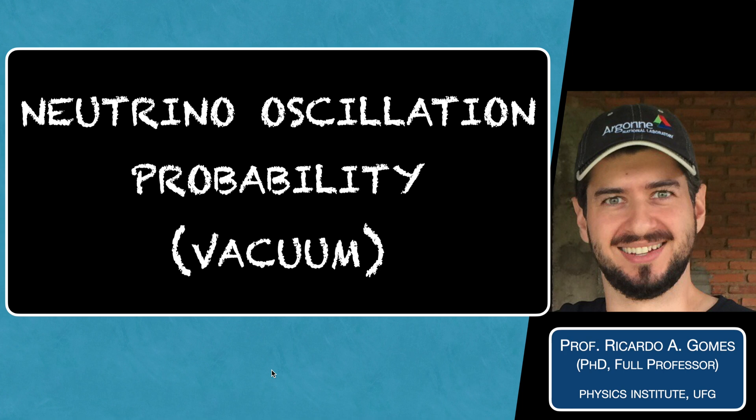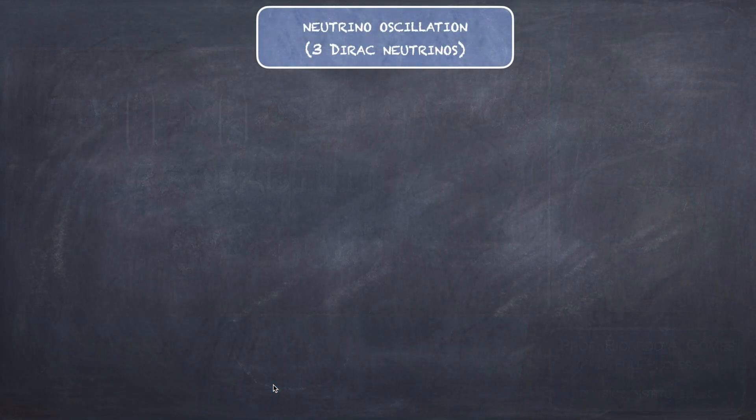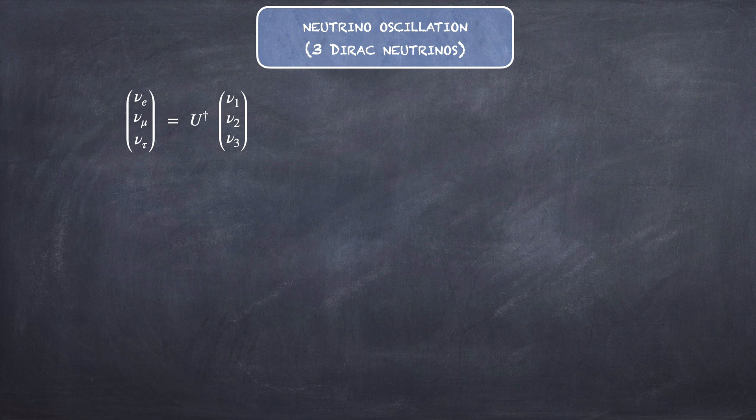Hello everyone, I'm Professor Ricardo. The purpose of this video is to calculate the neutrino oscillation probability in vacuum for the case of three Dirac neutrinos.